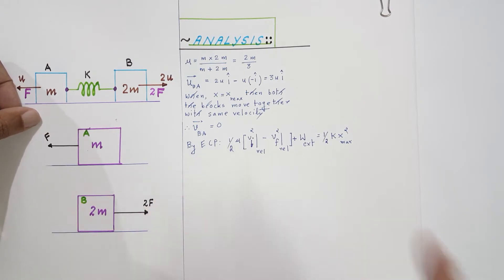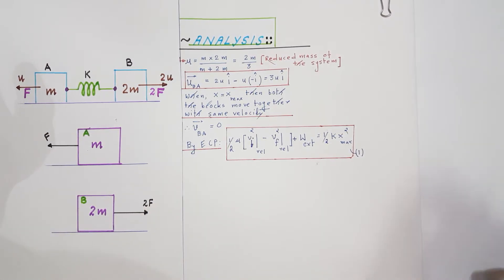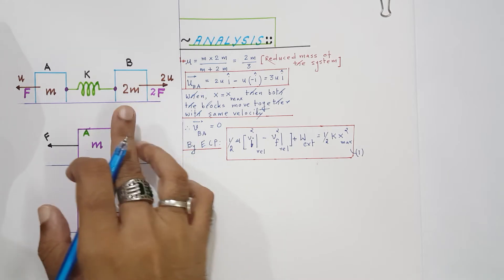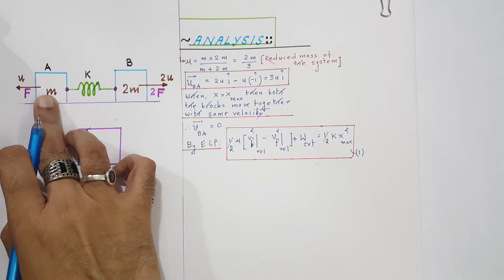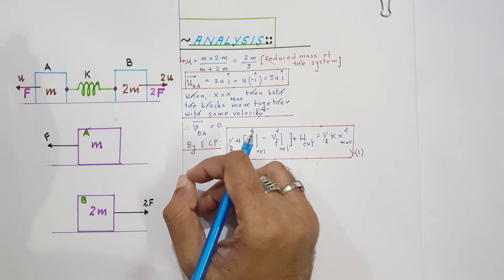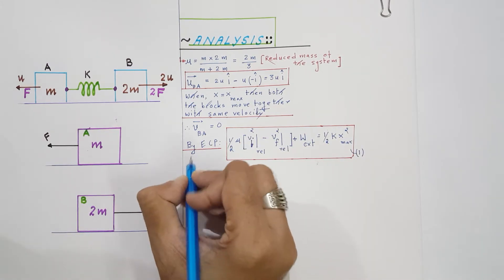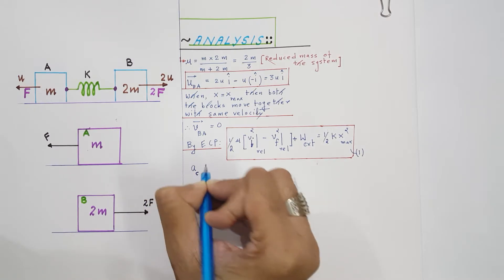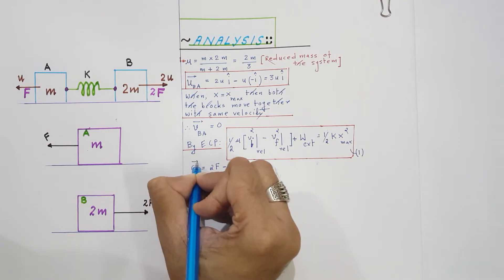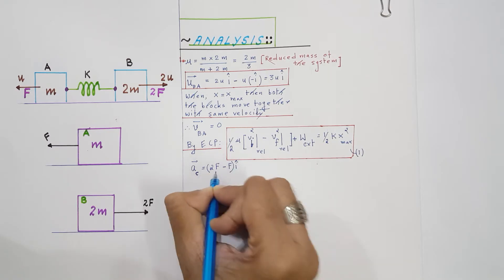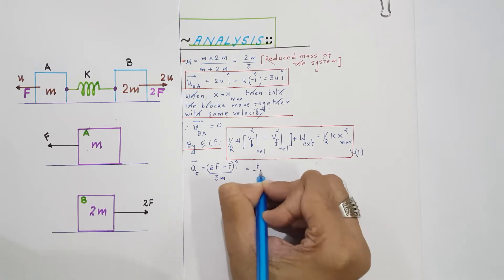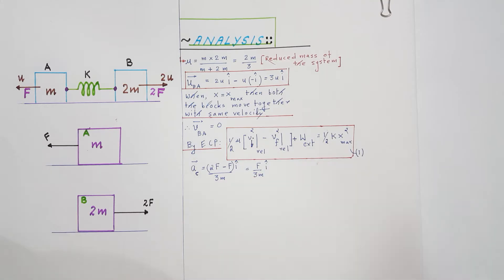In step two of the problem, force F is applied on block A and force 2F on block B. The total mass of the system is 3m. The acceleration of the center of mass is the net force divided by total mass: (2F − F)/3m = F/3m in the î direction.